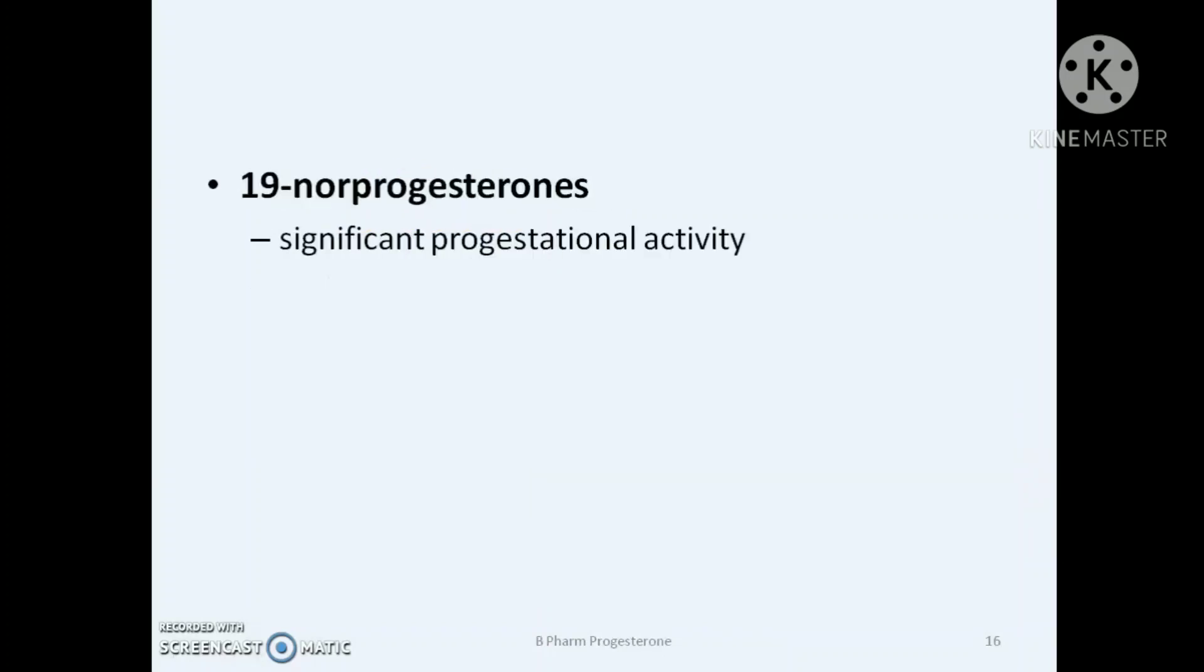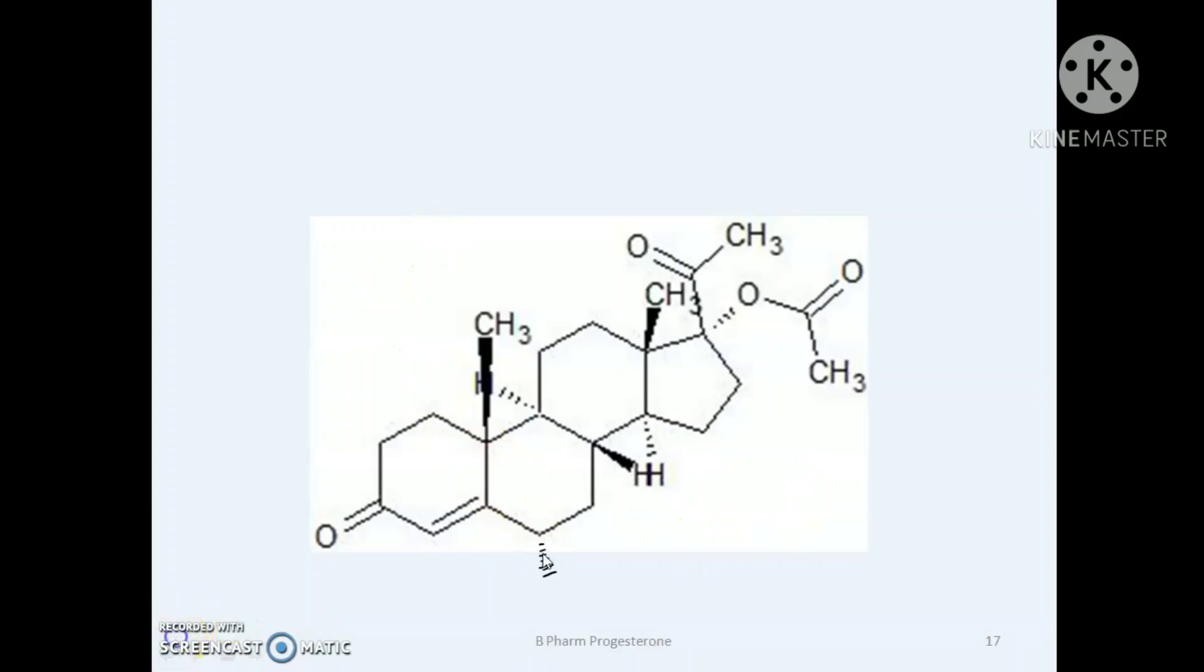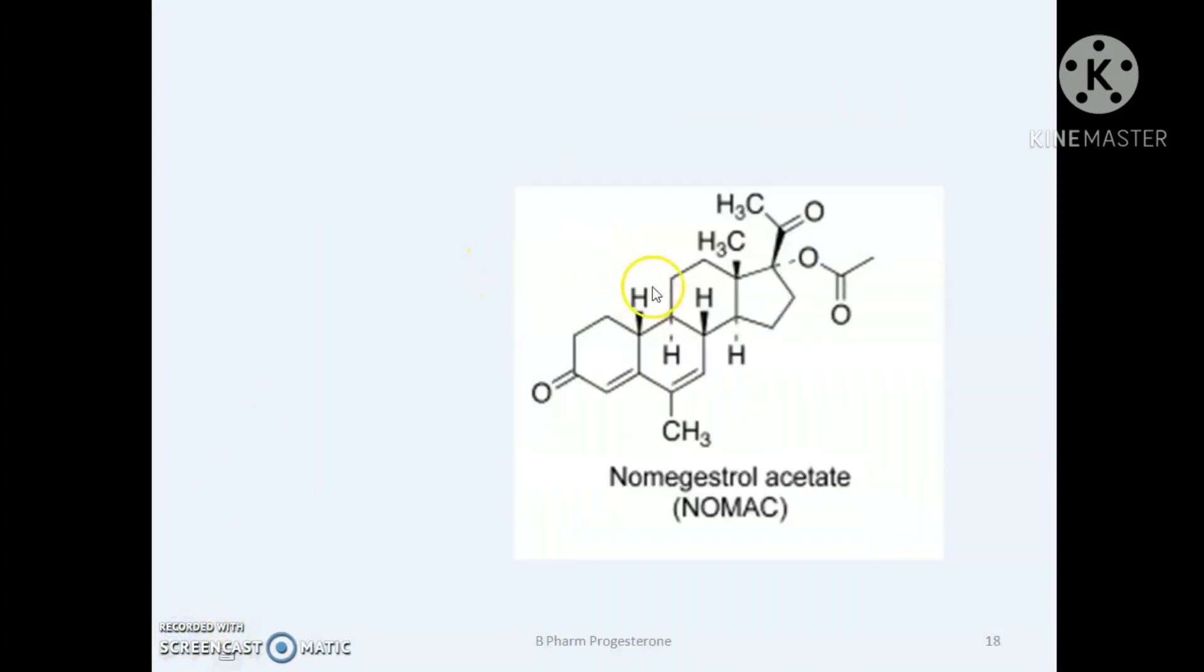Next is 19-nor progesterones. Nor refers to removal of methyl group from the 19th position. C19 methyl group is removed to form 19-nor progesterone derivatives. They have increased progestational activity. Example is nomegestrol acetate. This is hydroxyprogesterone acetate. If a methyl group is introduced at C6 position and the 19th methyl group is removed, we get nomegestrol acetate or NOMAC.